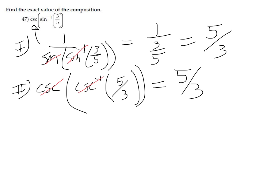So far we've seen that we can take the function cosecant, flip it to 1 over sine, and then the sine and the arc sine cancel, giving 1 over three-fifths which is five-thirds. We can also change the arc sine to arc cosecant, and when that happens the number inside flips — and it reduces to five-thirds. The third way is with triangles.